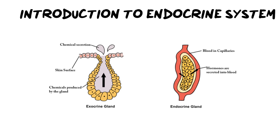We are going to unpack the differences between endo and exocrine glands, look at the hormones that are secreted and their functions, and finally tackle the most difficult aspect of this section, which is the negative feedback loop that we see in exam questions.